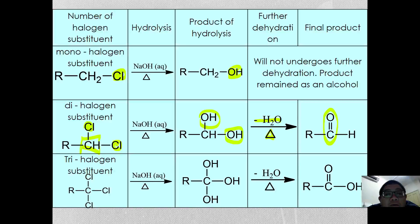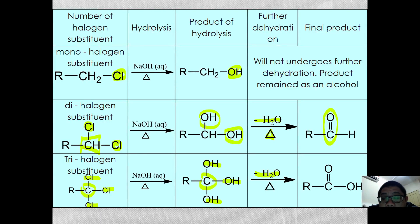Finally, if you have a tri-substituted chloro-haloalkane at the same carbon, they will first be hydrolyzed to form three hydroxyl groups at the same carbon. Eventually dehydration will also take place and you end up forming a carboxylic acid. These are the ways of how we prepare alcohols from multi-substituted haloalkanes.